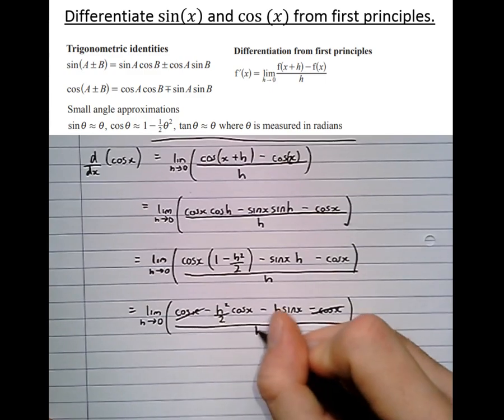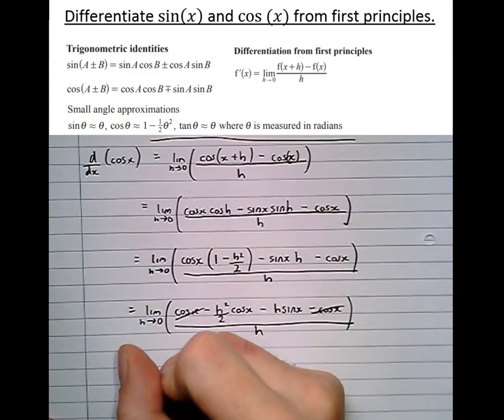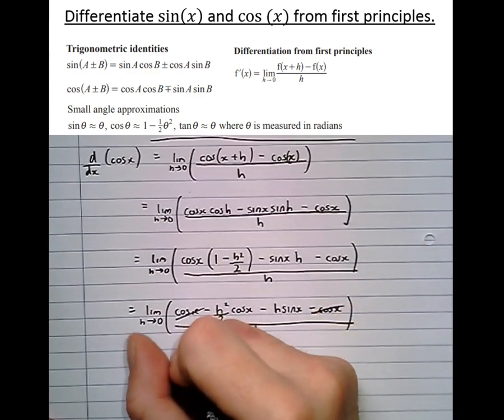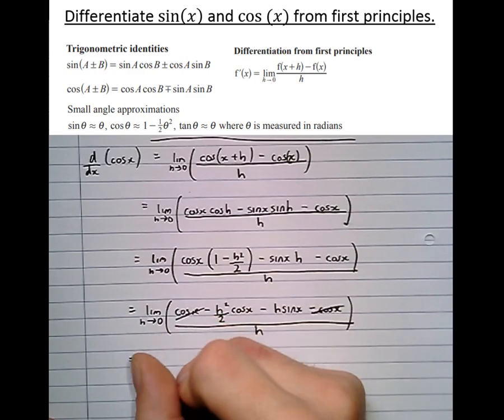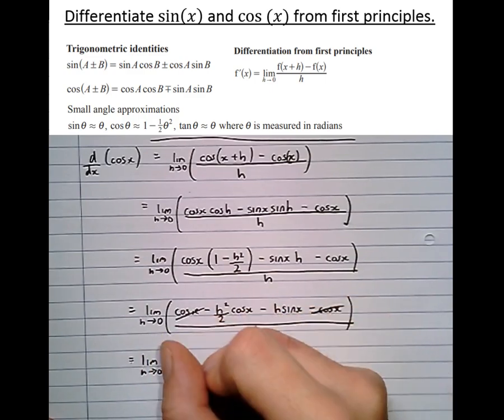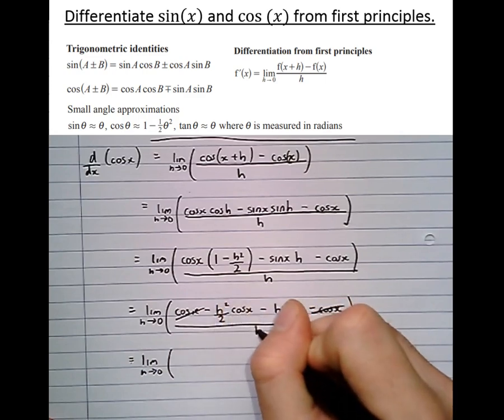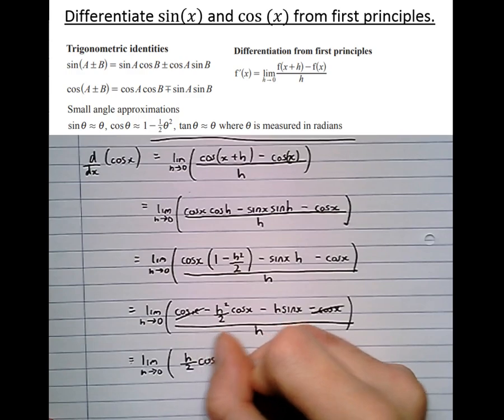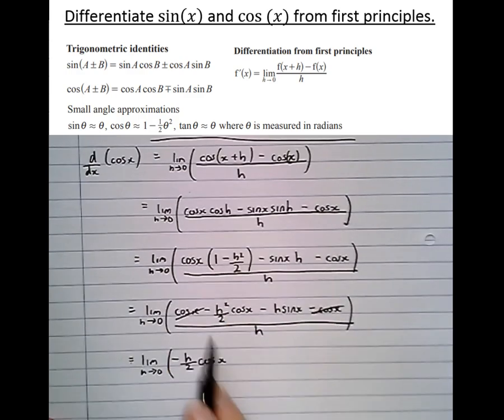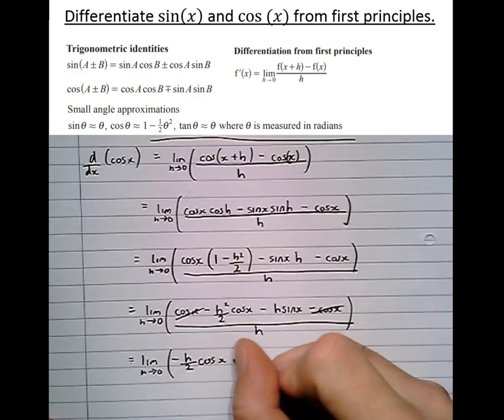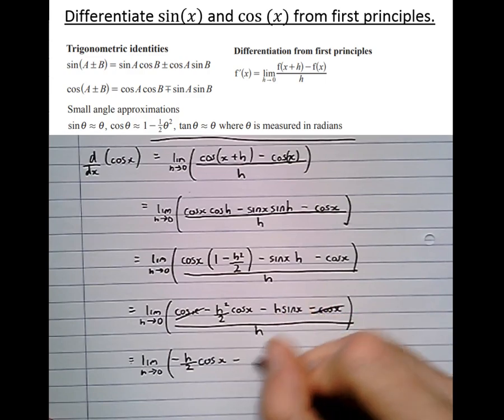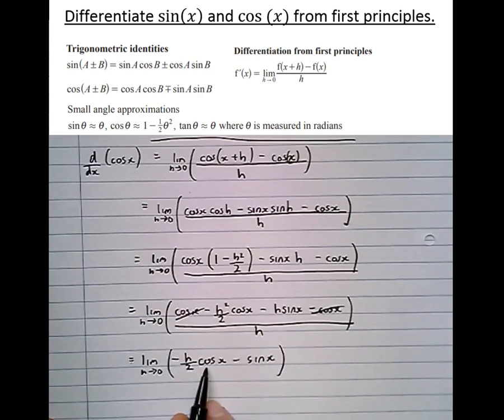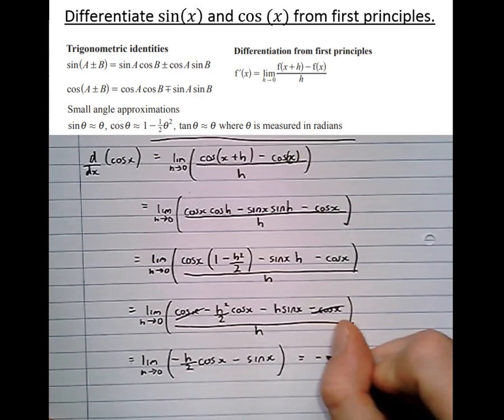That was all over h, so now simplifying what we've got left equals the limit as h approaches 0 of h squared divided by h which is minus h over 2 cos x, minus, and h over h is 1, sin x. And as h approaches 0, this becomes 0, that just leaves us with minus sin x.